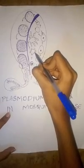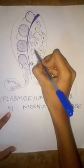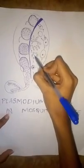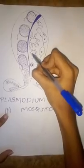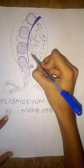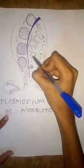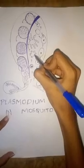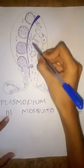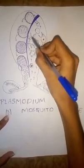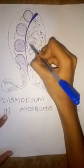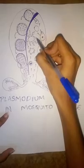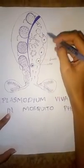The male gamete first undergoes a pronuclei stage, in which the nucleus of the male gamete is divided into 8 parts. Each part forms a flagellum-like structure. This shows lashing movements and goes to meet with the female gamete.